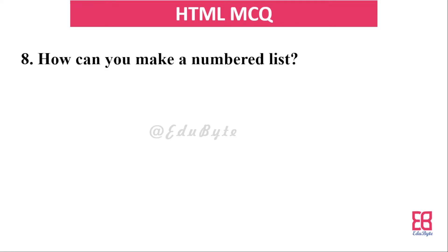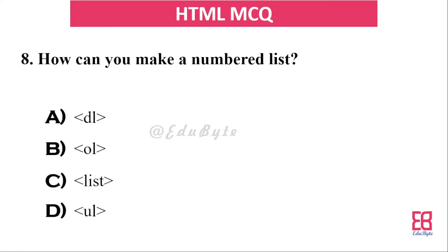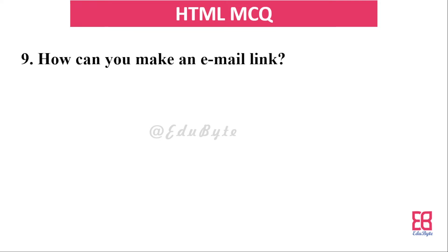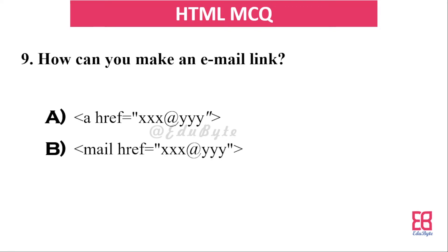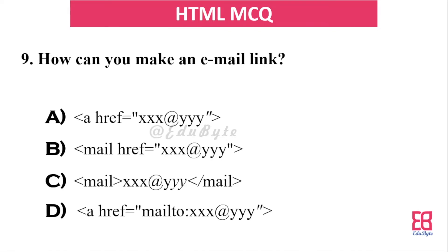Question seven: how can you make a numbered list? The options include DL, OL, and UL. The correct answer is `<ol>` — the ordered list tag creates a numbered list.